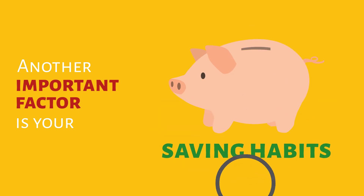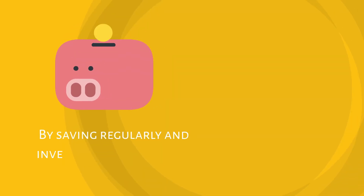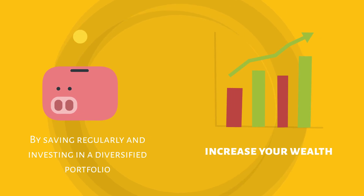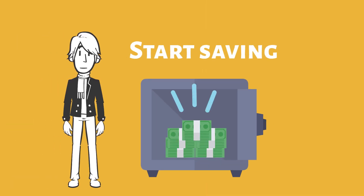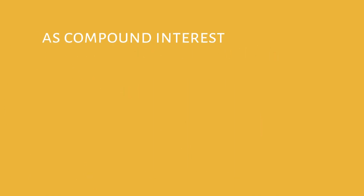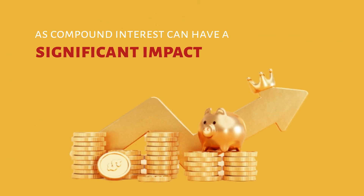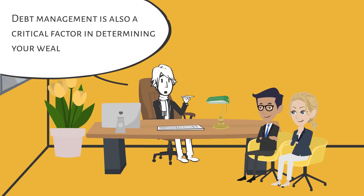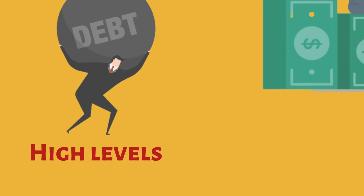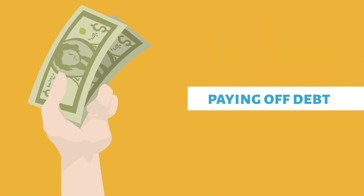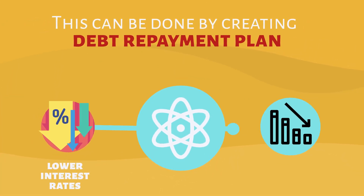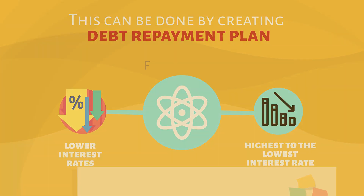Another important factor is your saving habits. By saving regularly and investing in a diversified portfolio, you can increase your wealth over time and improve your wealth percentile. It's important to start saving as early as possible, as compound interest can have a significant impact on your wealth over the long term. Debt management is also a critical factor in determining your wealth percentile. High levels of debt can decrease your wealth percentile, so it's important to focus on paying off debt as soon as possible. This can be done by creating a debt repayment plan, negotiating lower interest rates, and prioritizing your debts from highest to lowest interest rate.